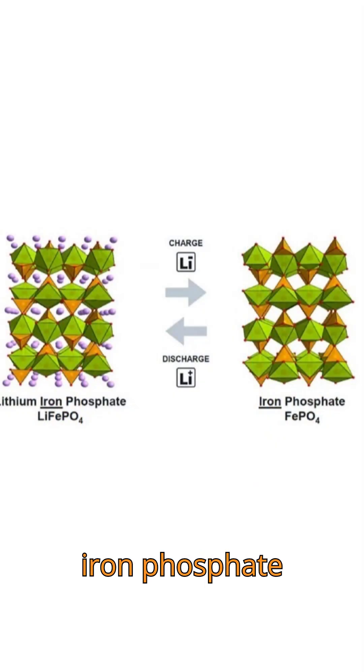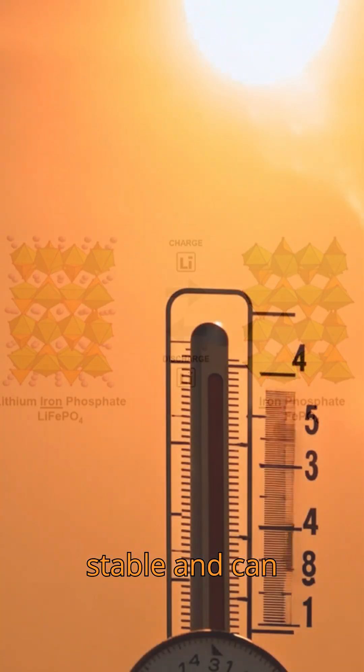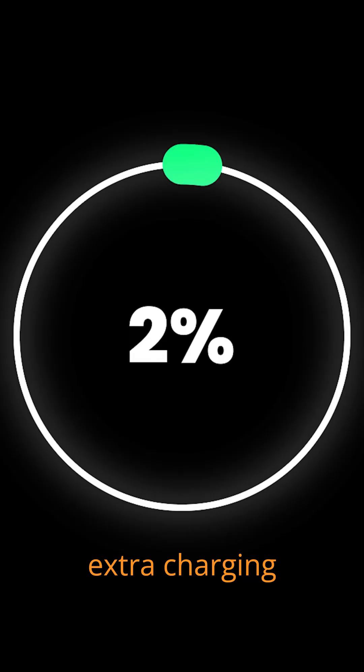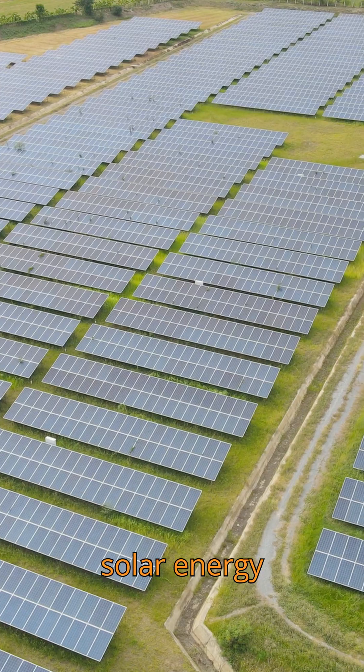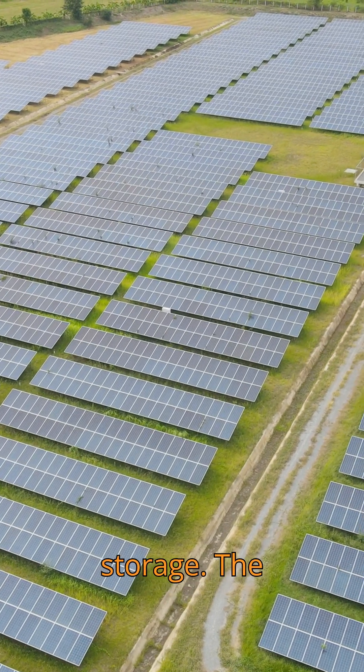This is the lithium iron phosphate LFP battery. It uses cheaper iron, and more importantly, it is much safer and thermally stable and can withstand thousands of extra charging cycles. That's why we see it being used in solar energy projects and large-scale electricity storage.